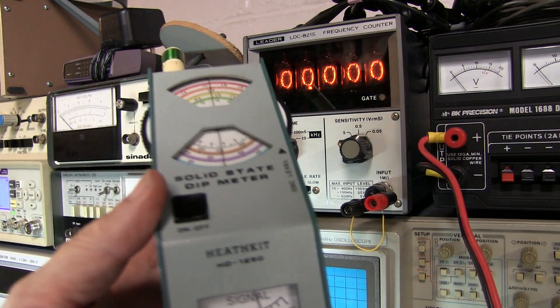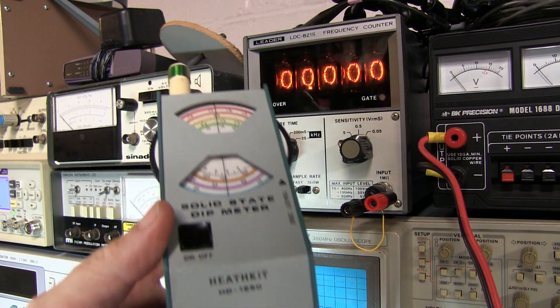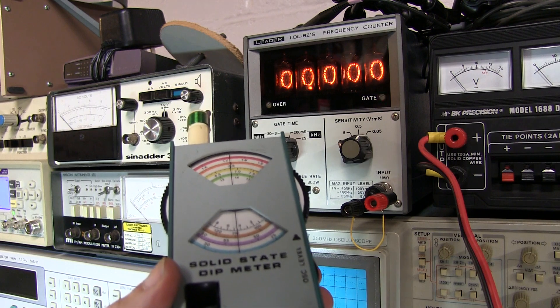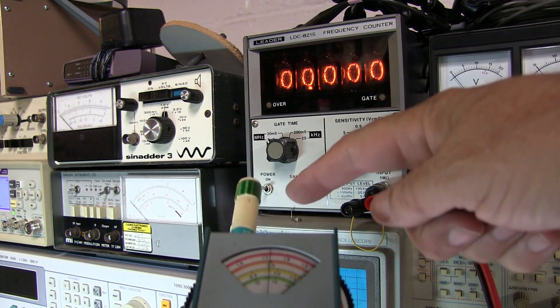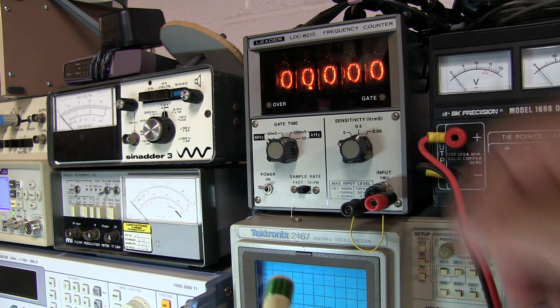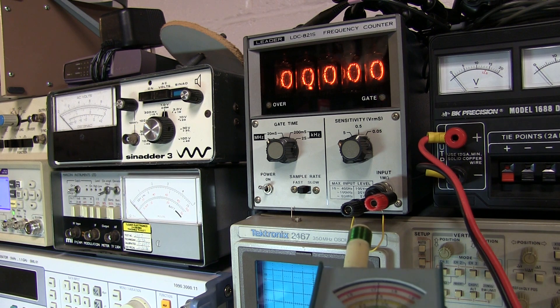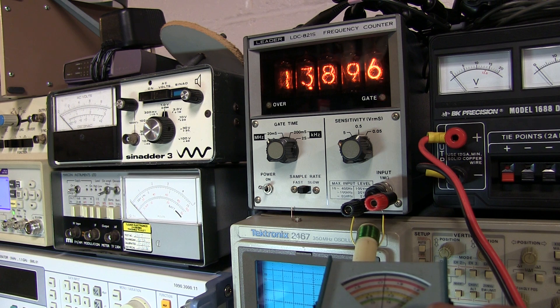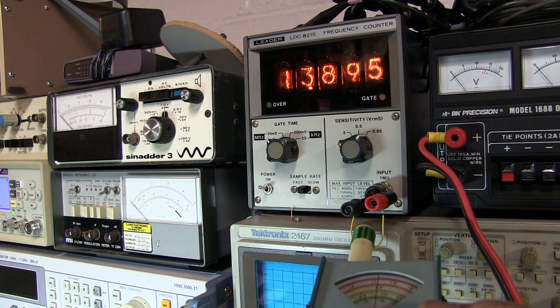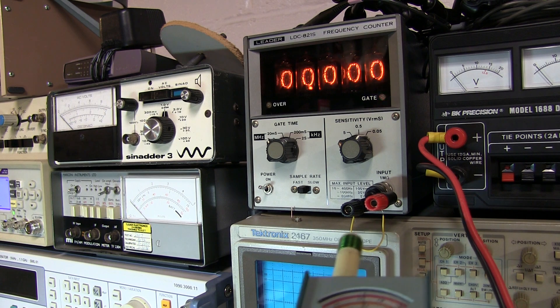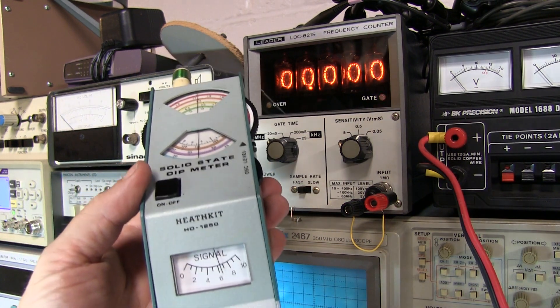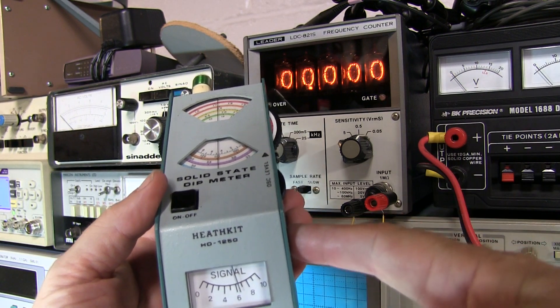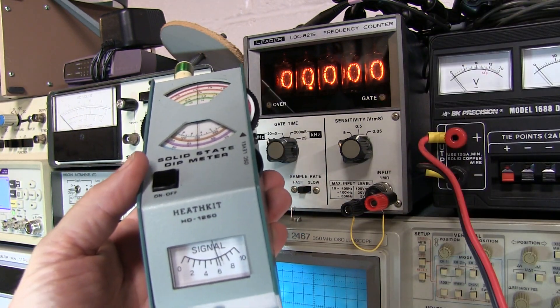Okay, so now we'll take the grid dip meter without touching the frequency tuning control and couple the coil into a little pickup loop here in front of the counter. We can take a look and see that we're at about 13.895896, which is really just what we saw with the antenna analyzer. So that's yet another way of checking the resonance of your trap with a grid dip meter and a frequency counter.